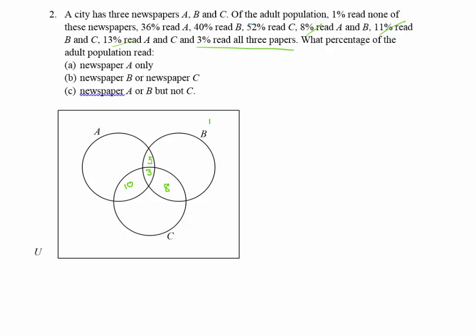52% read C, so 52 minus 10, minus 3, minus 8 gives 31 left for C only. 40% read B, so 40 minus 5, minus 3, minus 8 gives 24 for B only. 36% read A, so 36 minus 10, minus 3, minus 5 gives 18 for A only. Now the Venn diagram is complete.